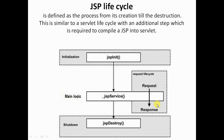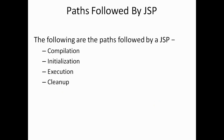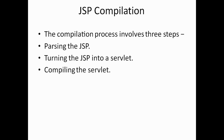In the compilation phase, whenever a browser requests a JSP, the JSP engine first checks whether it needs to compile the page — if the page has never been compiled or if the JSP has been modified since it was last compiled. The compilation process involves three steps: parsing the JSP, turning the JSP into a servlet, and compiling the servlet.